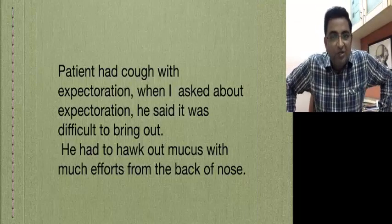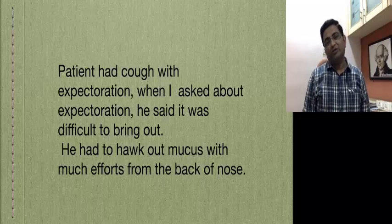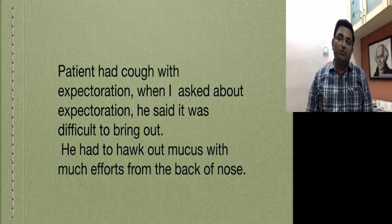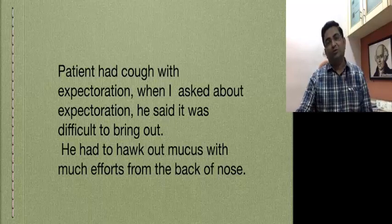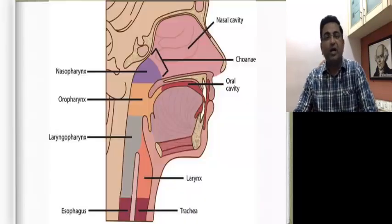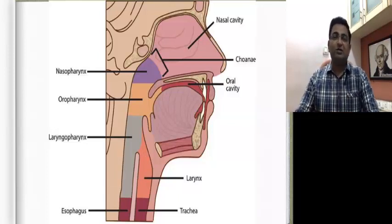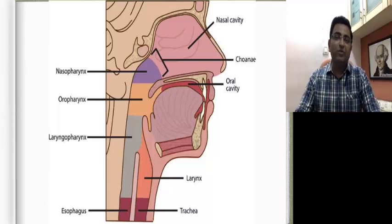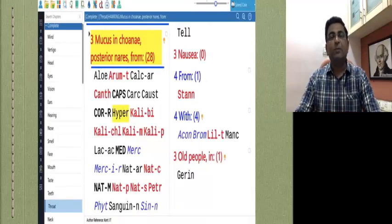There is another case. The patient had a cough with expectoration. When I asked about the expectoration, he said it was difficult to bring out. He had to hawk out mucus with much effort from the back of the nose. The patient was constantly doing that — so there is hawking. If you see the anatomical picture, this is the nasopharynx. Here there is mucus, and that mucus leads to constant irritation, so the patient is constantly hawking. We have a very interesting rubric in throat: Mucus from posterior nares — hawking. You can use this rubric.